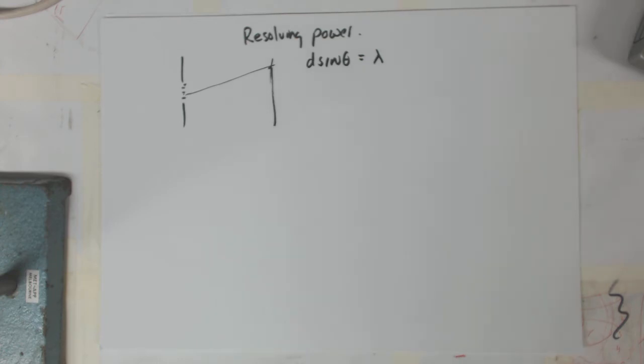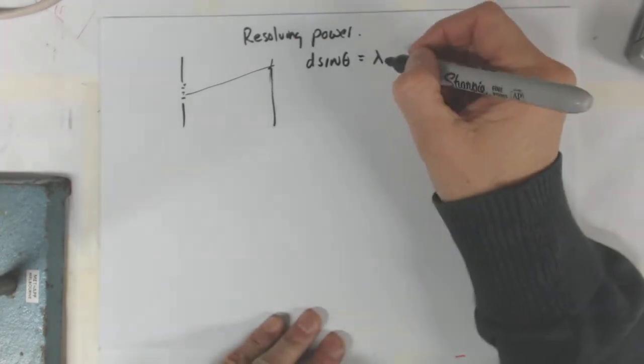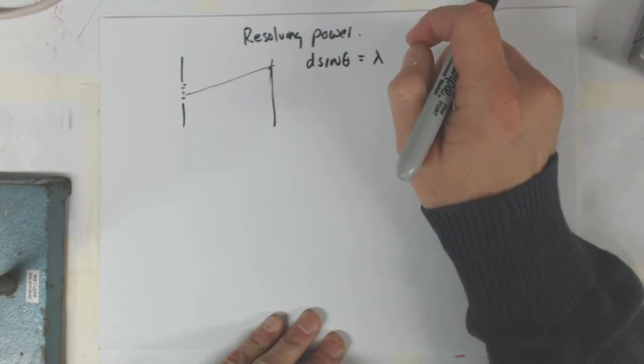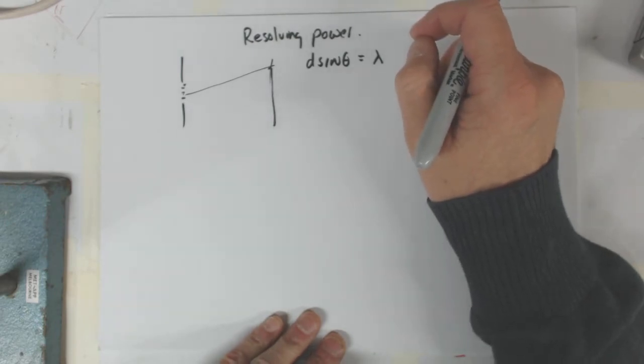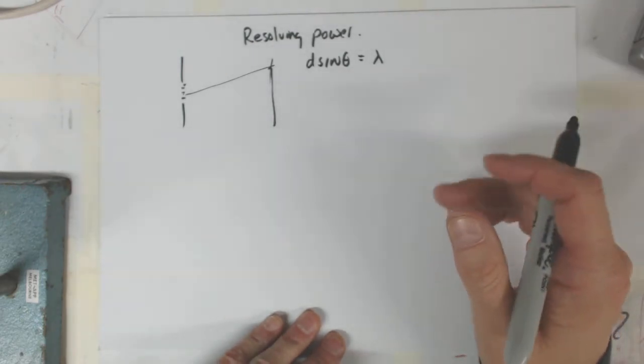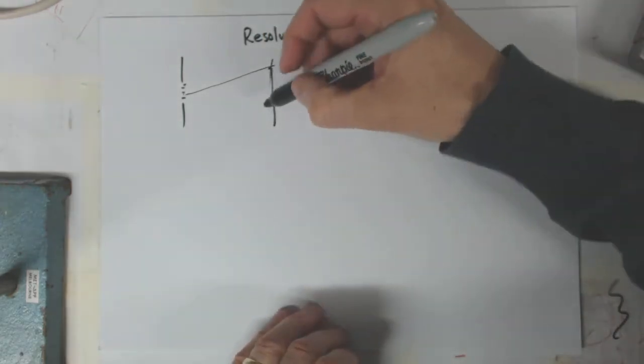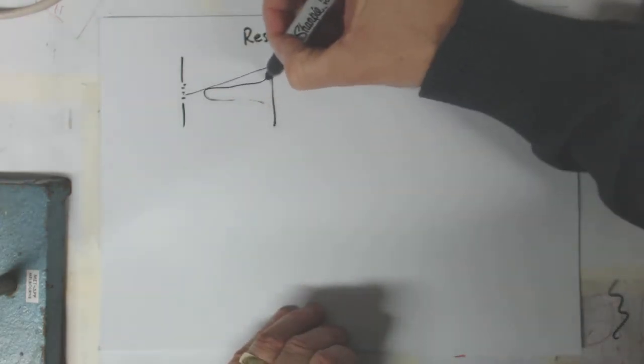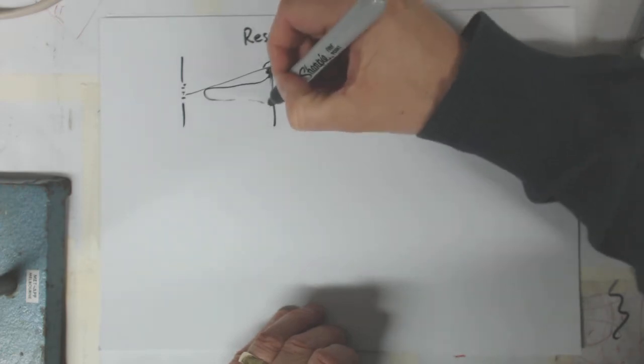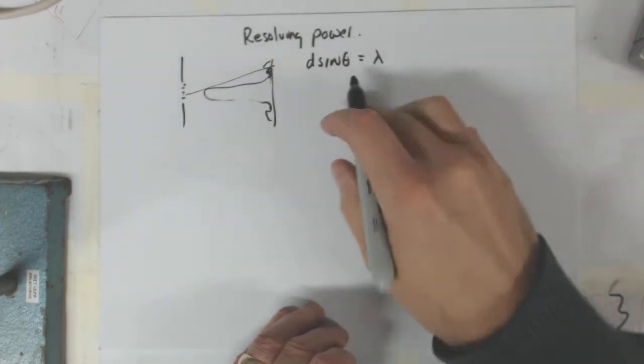And said that the minimum ended up being at d sine theta equals the wavelength. This came as a little bit of a surprise because we expect the wavelength difference or path difference to end up being a point of constructive interference. So we end up getting that diffraction pattern for the single slit. You get a central maximum, but then you get this little minimum over at that point there.